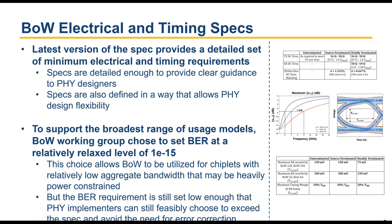Having said that, 1E-15 is still good enough that implementers could feasibly choose to significantly exceed that spec and completely avoid the need for error correction. For high-performance applications with high aggregate bandwidth and low latency requirements, you really have to push the error rate substantially below 1E-15. The 1E-15 floor was chosen so that even very power-constrained designs can achieve it, while still allowing optimization for higher-throughput applications.